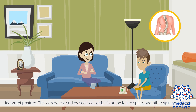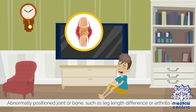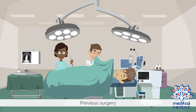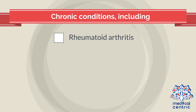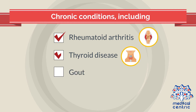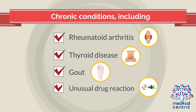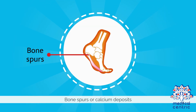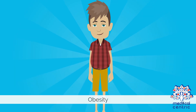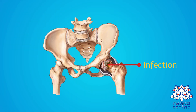Arthritis of the lower spine and other spine problems. Abnormally positioned joint or bone, such as leg length difference or arthritis in a joint. Previous surgery. Chronic conditions, including rheumatoid arthritis, thyroid disease, gout, or an unusual drug reaction. Bone spurs or calcium deposits. Obesity. In rare cases, it may result from an infection.